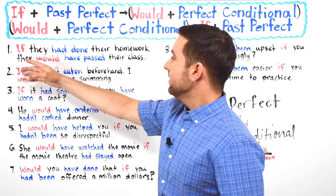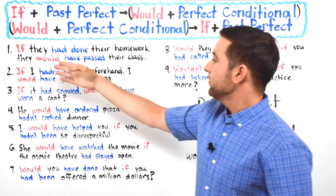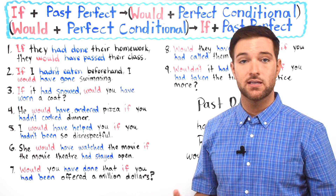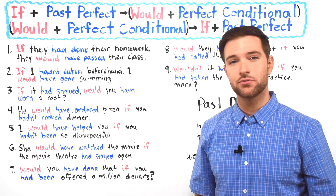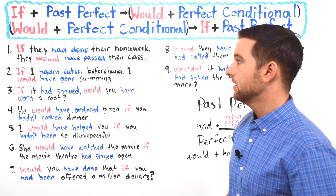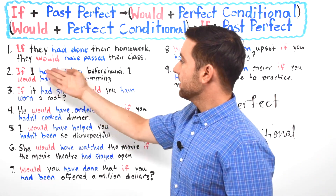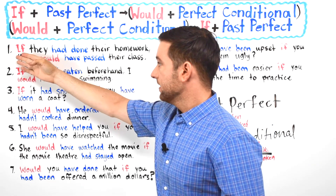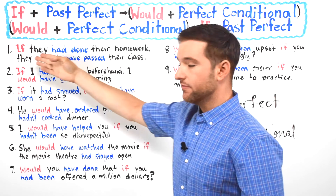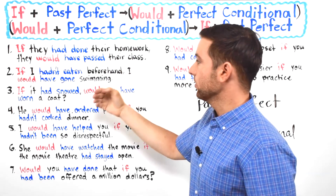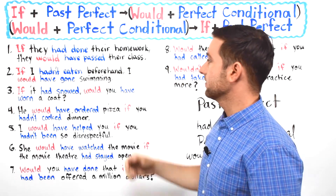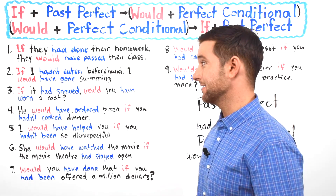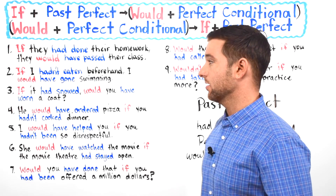Number one: 'If they had done their homework, they would have passed the class.' We're talking about something that happened in the past — it's hypothetical, it didn't really actually happen. You're talking about a situation and the result of what would have happened if something else occurred. So if they had actually done their homework, they would have passed the class, gotten an A, B, or C. But instead, they did not pass — they probably got an F.